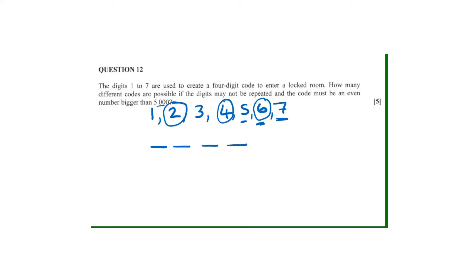For us to be able to do this, we are going to do it using two cases. We can now call this Case Number 1. Why are we saying Case Number 1? Case Number 1 is when this code starts with a 6. So if it starts with a 6, it means surely on the first position we have one option.